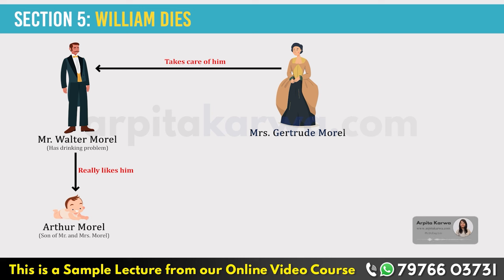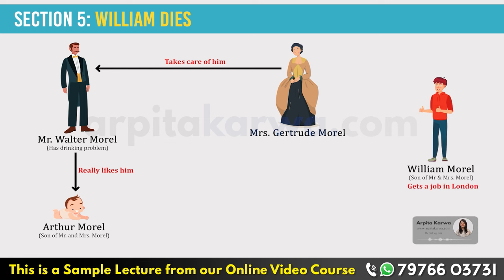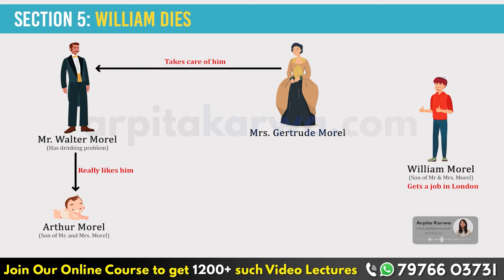As time went by, William turned 13 and Mrs. Morrill got a job, but due to her job, Mr. and Mrs. Morrill began fighting again. When William turned 19, he received a job offer in London — he was very good at his studies and got a well-paying job. However, he had to leave his family and mother. Mrs. Morrill didn't like the idea of her son leaving for London, but he eventually left. Meanwhile, Paul was growing up and was very close to his sister Annie. Later, an accident happened in London and William died due to a skin disease.